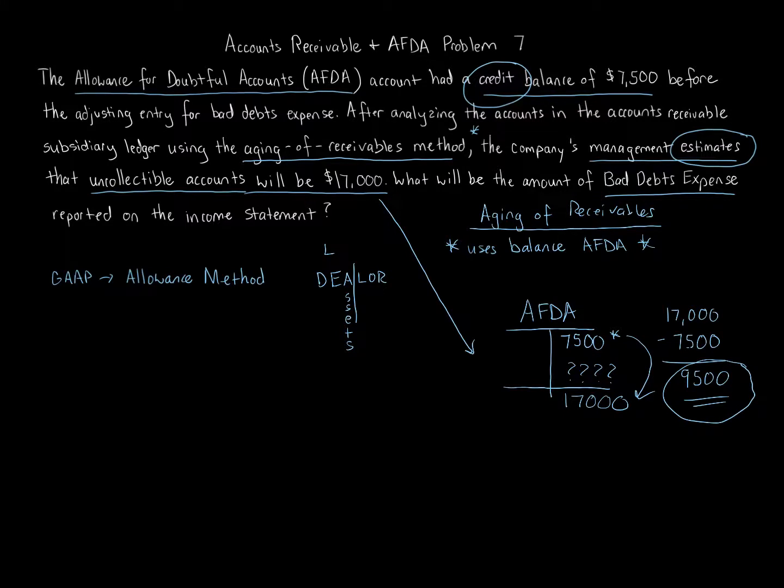So we've just calculated the $9,500 using our AFDA analysis. And that is a lot of times how you have to calculate that given the information. One thing before we go, remember, percent of net credit sales, we don't worry about the AFDA balance and the problem. We ignore it. We just take the percent given multiplied by the net credit sales. That gets our bad debt expense. But when it comes to the aging of receivables, we do care about the balance in AFDA. We're going to use that balance. And that's why we had to look at the 7,500 balance here to get the 17,000. And that's how we got the 9,500, which is the answer to how much bad debt expense we have on the income statement. It's $9,500.